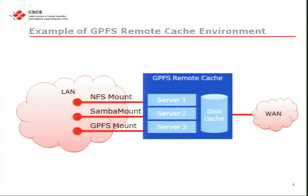You can export as CIFS or use GPFS — you export exactly the cache, which practically is a fileset with an independent inode space. When you create this cache you create a new file system, and if you disconnect the link you can use this cache as a standard copy of the data you have at home.